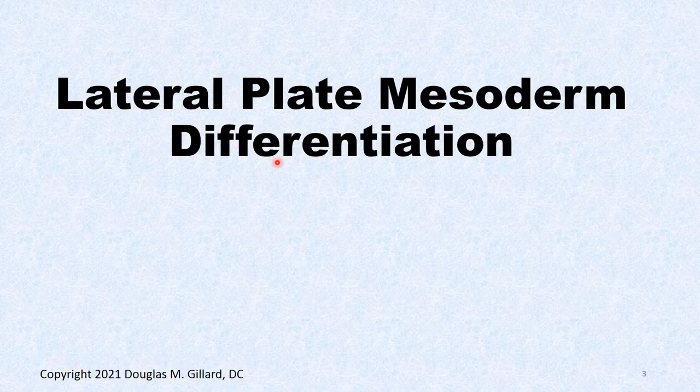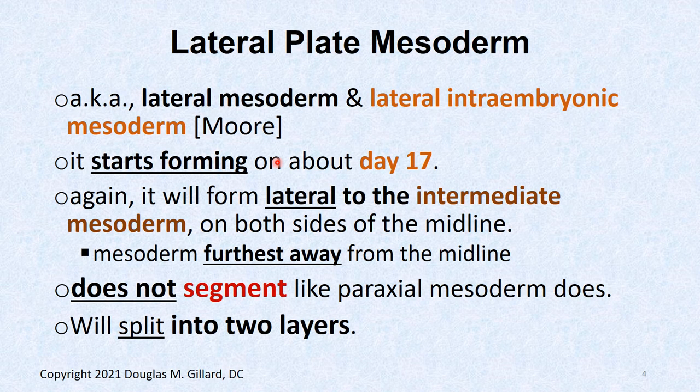Let's talk about more differentiation and maturation of lateral plate mesoderm. It's called lateral plate mesoderm — some chiropractic board books call it lateral intraembryonic mesoderm, but there's really no need for that. We do have an extraembryonic mesoderm, so you can call it lateral plate mesoderm to differentiate it. Some people just call it lateral mesoderm. It starts forming about day 17 and forms lateral to the intermediate mesoderm.